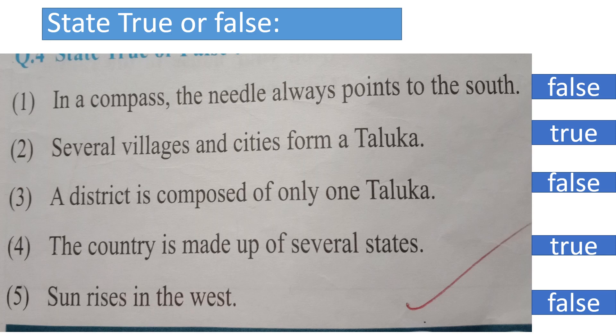Next question: state true or false. First one, in a compass the needle always points to the south — False. Second, several villages and cities form a taluka — True. Third one, a district is composed of only one taluka — False. Fourth one, the country is made up of several states — True. And fifth one, the sun rises in the west — False.